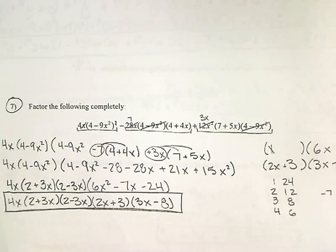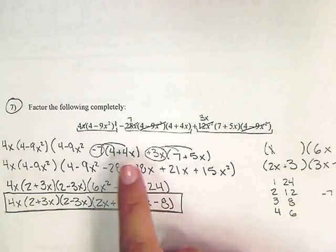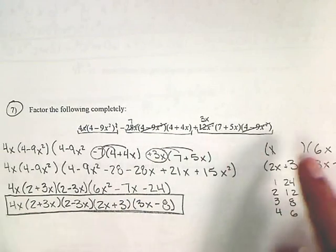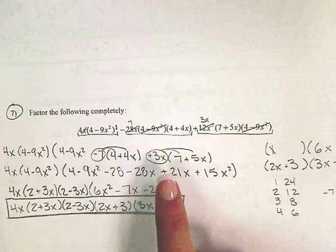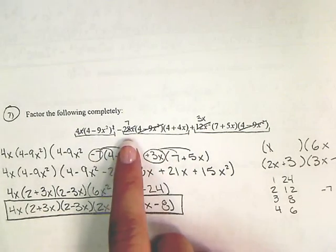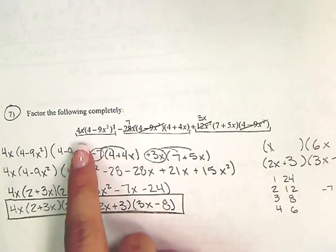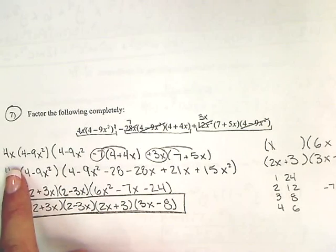Okay, so first we started out by seeing what we needed to factor out and what was doubled and tripled in the equation. And so we saw that each coefficient had a 4 and each had an x, so we took out a 4x right here.